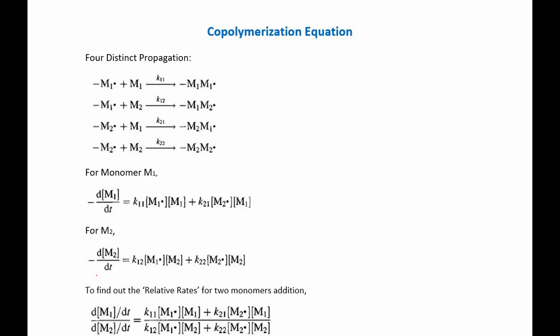Today in this video I'm going to talk about the copolymerization equation. We have monomer M1 and M2, so we also have two polymer radicals M1 and M2. We can clearly write the rate of propagation for equation 1 as K11 times monomer radical 1 times monomer 1 concentration.